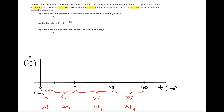We'd like to graph how large her velocities were during these four intervals. Each interval is represented by a rectangle, where the height of the rectangle tells you the velocity. For her first interval, she was traveling at 90 kilometers per hour with constant speed throughout the entire 15 minutes, so the graph is horizontal at a constant value of 90.